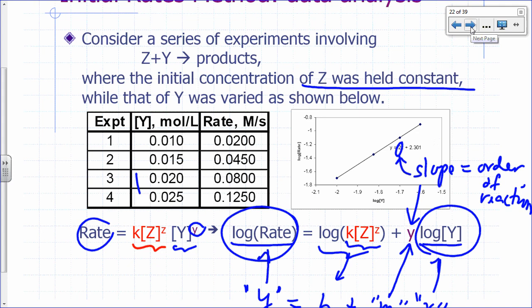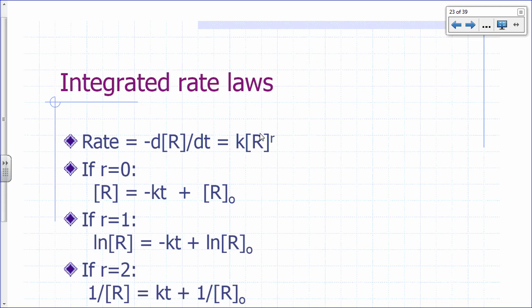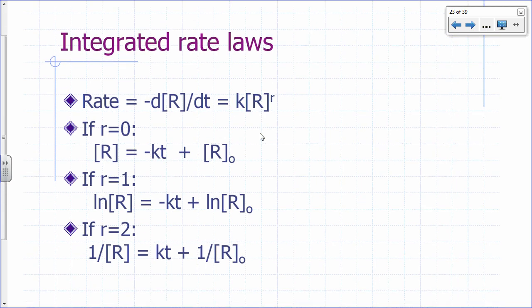For this particular data, the graph shows y = 2x + 2.301, so the slope is 2 — meaning the reaction is second order with respect to Y. This log-log plot of initial rate vs. initial concentration gives more confidence in your results since you're not relying on just two data points. We're going to do this kind of initial rate experiment in the lab.